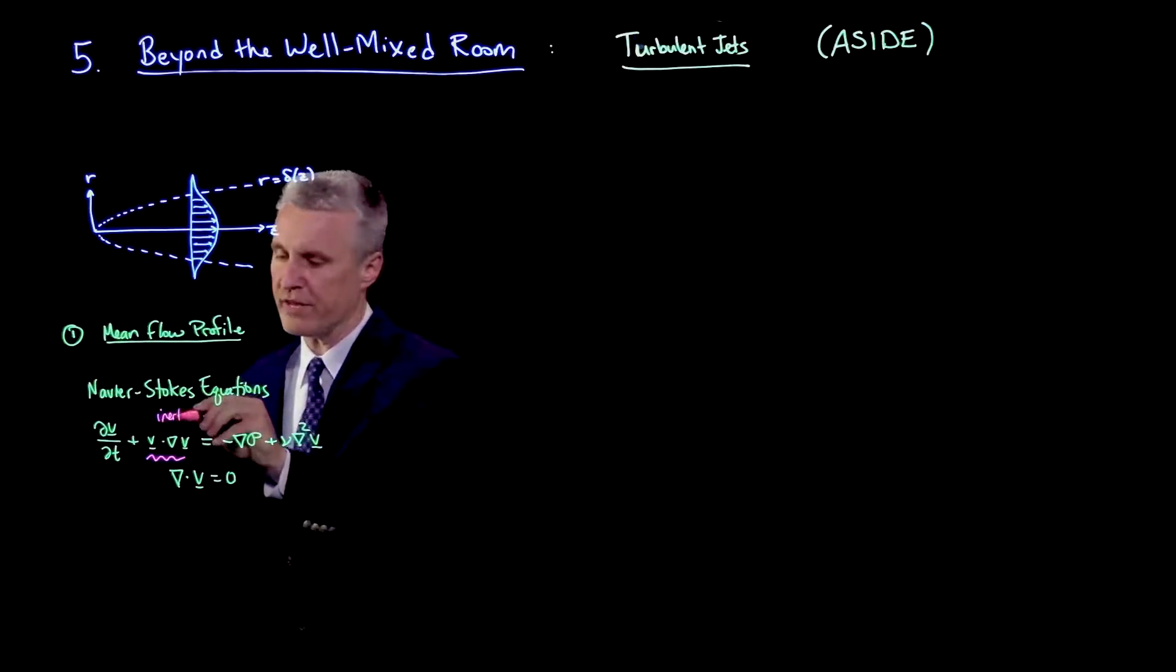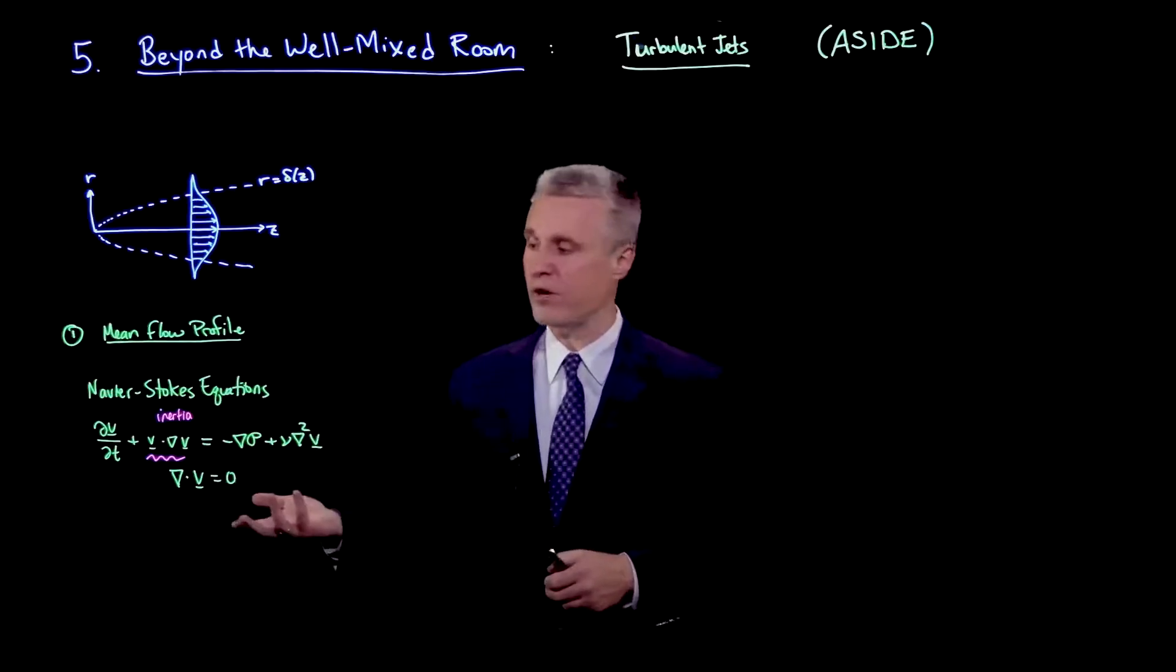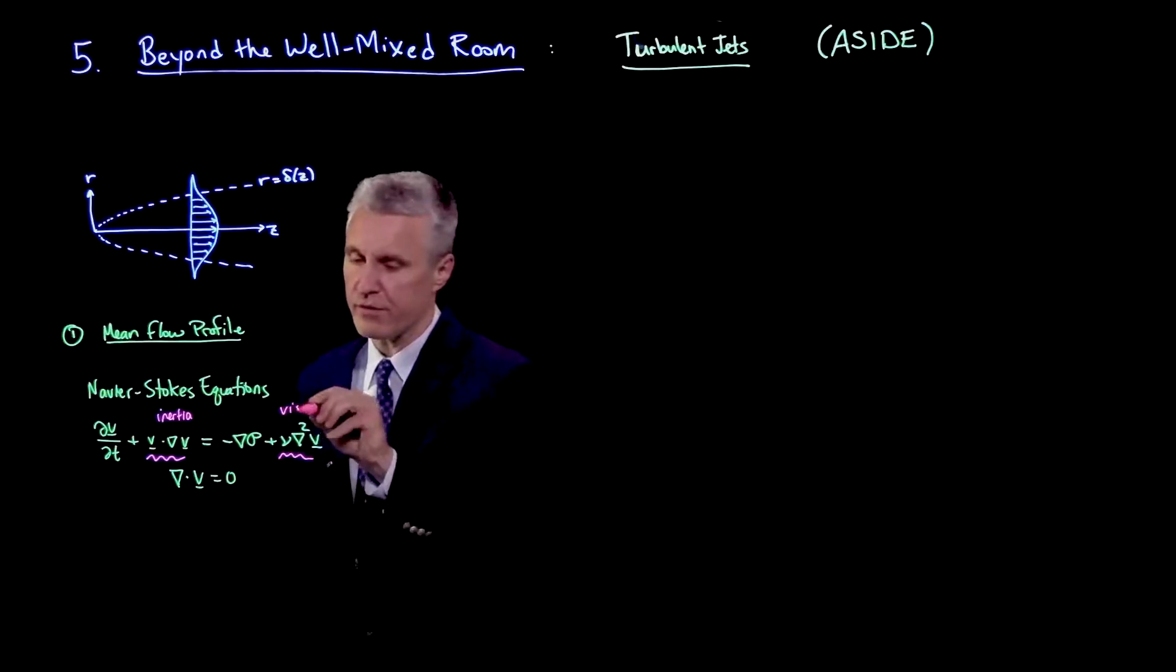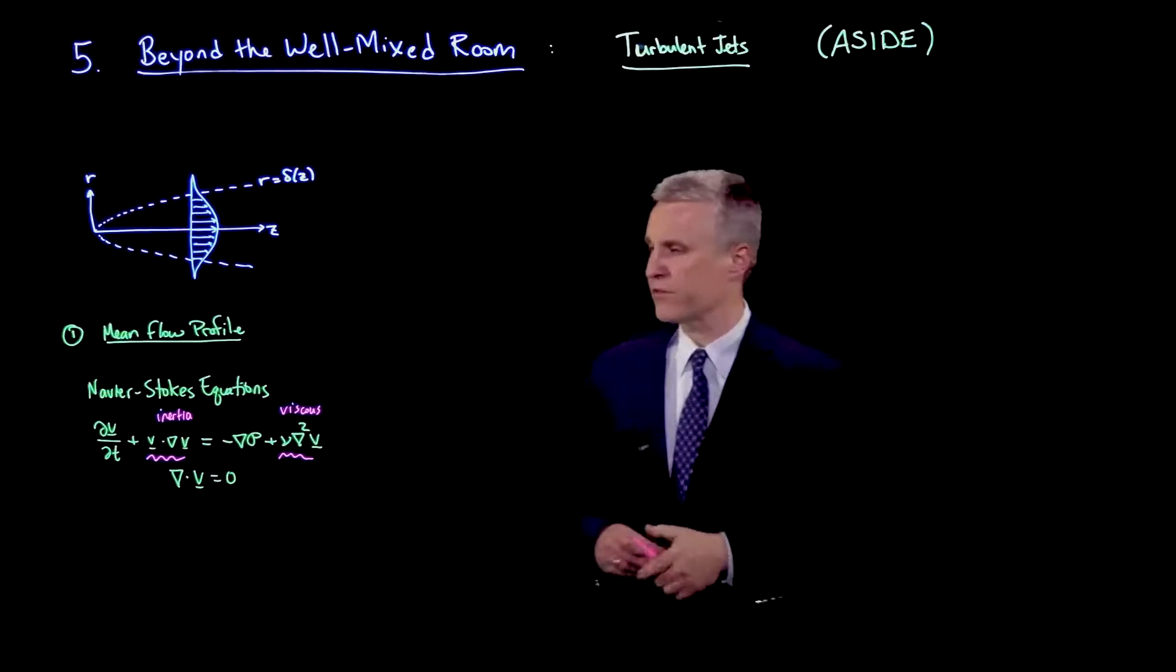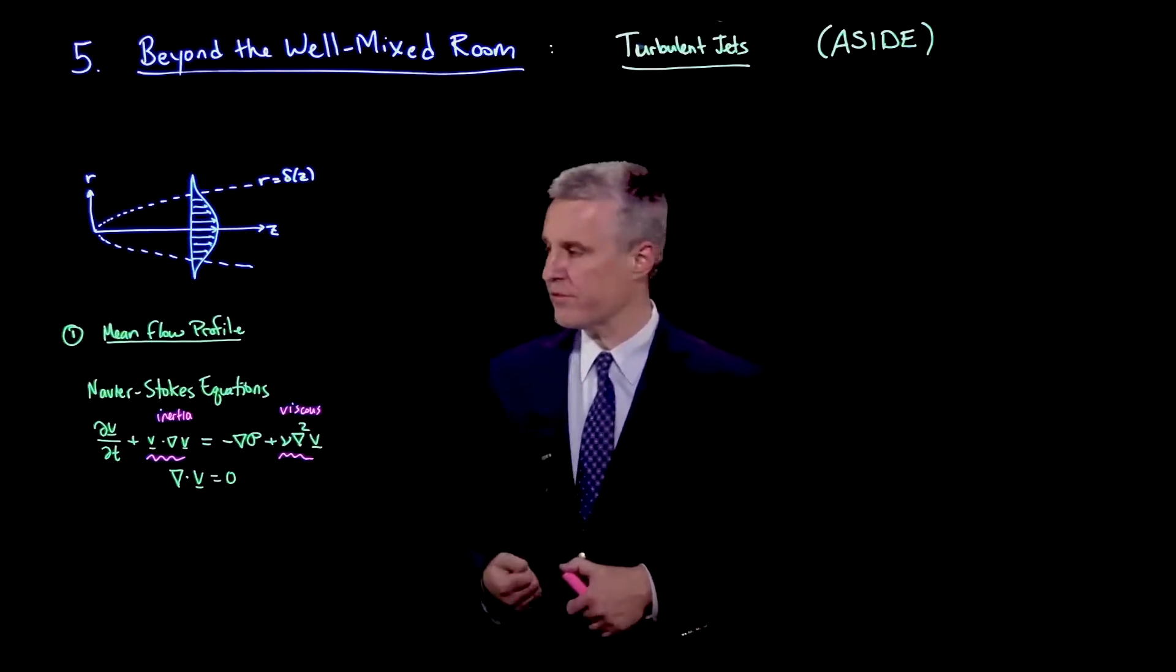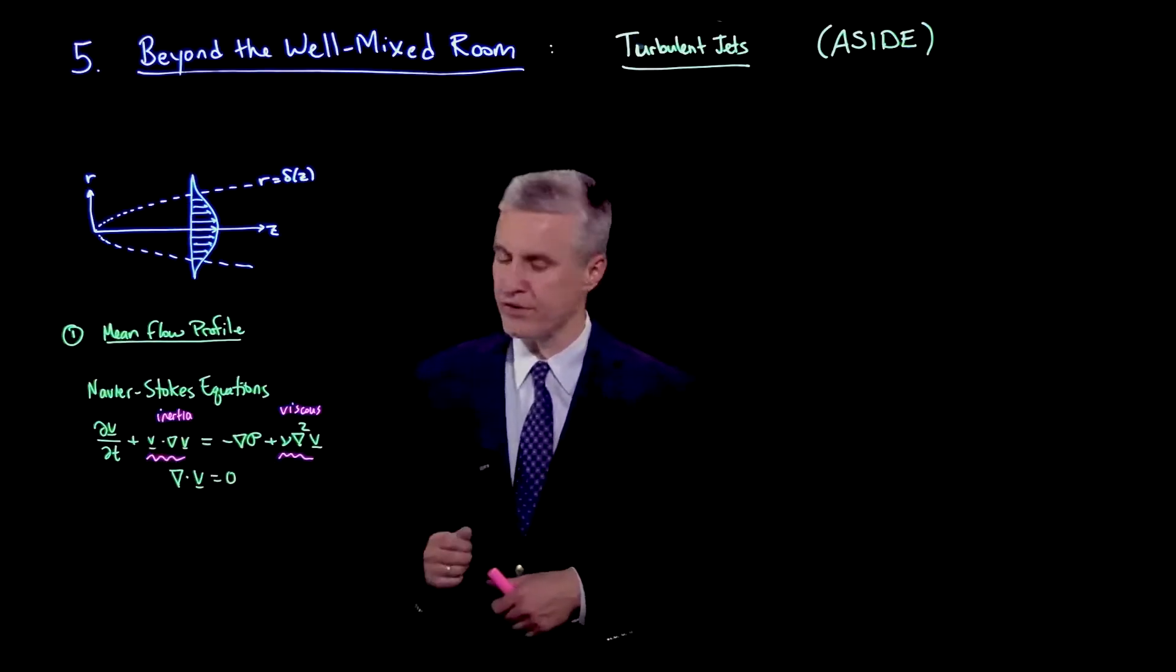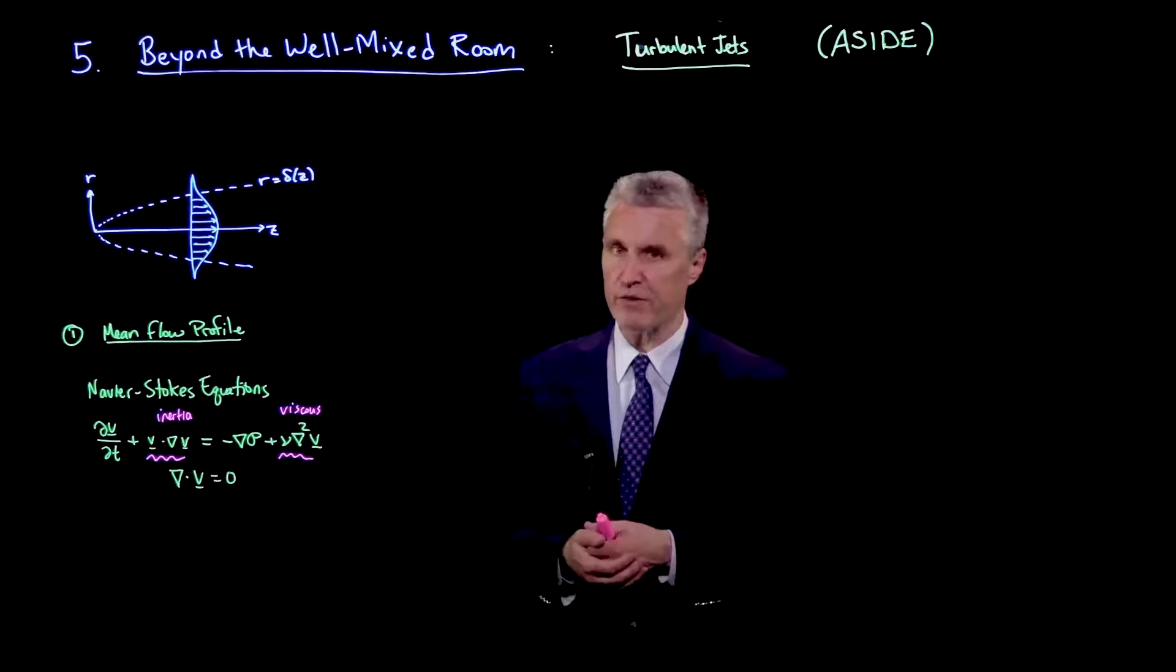We've already said that we have a high Reynolds number and turbulence results because the inertia is very strong compared to the viscous term, which is here. So that's the divergence of the viscous stress or the viscous forces on the fluid. These two terms we know are important. They have to balance. And the inertia is particularly strong and it is what leads to the very complicated flows that we see.